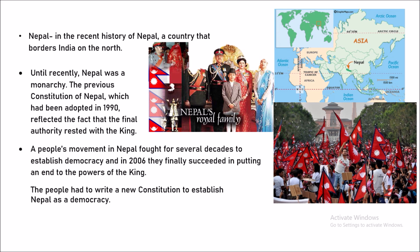As per the 1990 constitution, power rested with the king, so they had to draft a new constitution to establish Nepal as a democratic country where the final authority should be given to people's representatives, not the king. The reason they did not want to continue the previous constitution is because it did not reflect the ideas of the country they wanted Nepal to be. Moving from a monarchy to a democratic government requires changing all its constitutive rules in order to assure a new society.